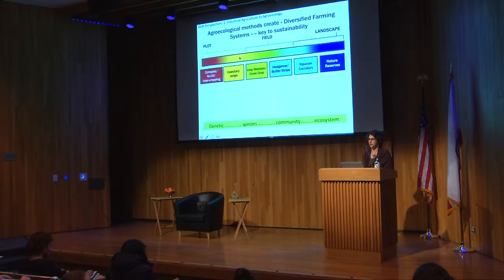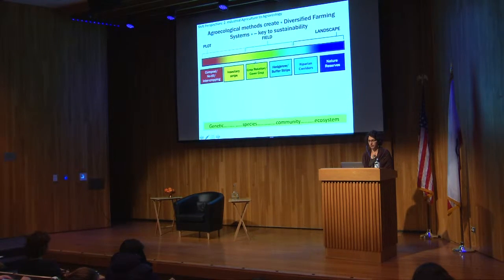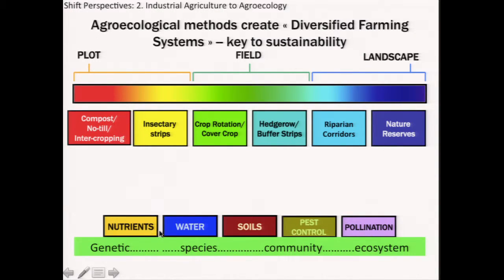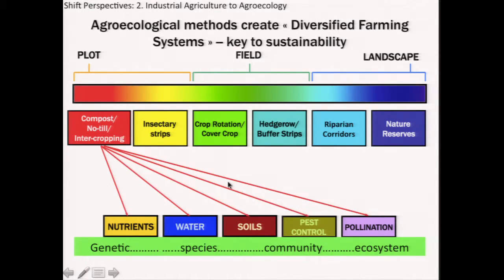We might add strips of flowers just to support beneficial insects. Rotating crops or cover cropping occurs at the whole field scale and is very important to diversify across time. We might have hedgerows around the fields that support beneficial insects, and riparian areas that have forest around them, and natural habitat. From plot to field to landscape scale, these techniques build up in scale and are important in terms of providing key inputs to agriculture: nutrients, water, soil fertility, pest control, and pollination.